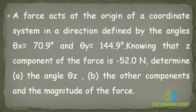A force acts at the origin of a coordinate system in a direction defined by the angles theta x = 70.9 degrees and theta y = 144.9 degrees. Knowing that the z component of the force is minus 52 newtons, determine the angle theta z, the other force components, and the magnitude of the force.